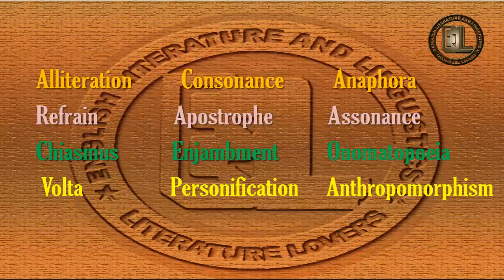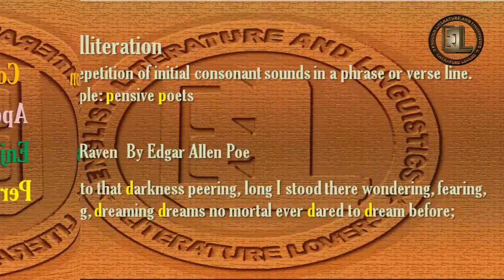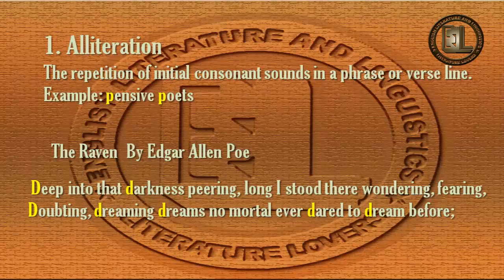So let's discuss them one by one. The first term I am going to discuss is alliteration. What is alliteration? It is the repetition of initial consonant sounds in a phrase or a verse line. For example, in your notes the highlighted piece represents an example of alliteration.